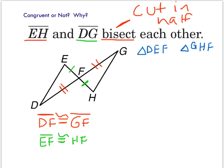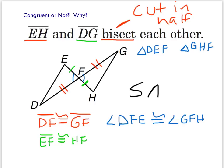And one last thing: whenever we have lines that intersect, we create vertical angles. So angle DFE and angle HFG are vertical angles, and vertical angles are always congruent. So we have two pairs of sides — the reds and the greens — and a pair of angles. It's possible to use side-angle-side. The blue angle touches both the red and the green sides, so it is an included angle. Therefore, these triangles are indeed congruent by SAS.